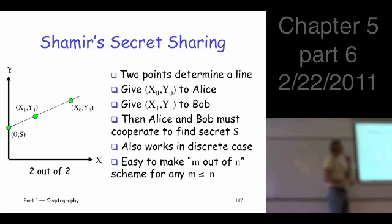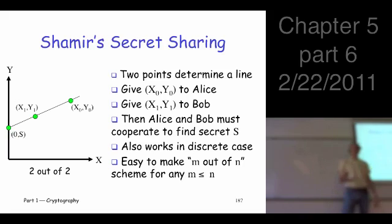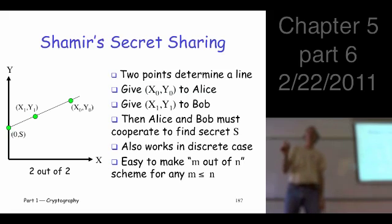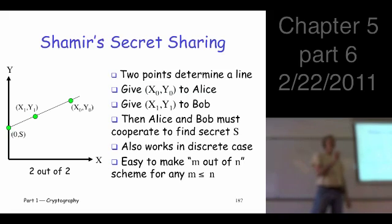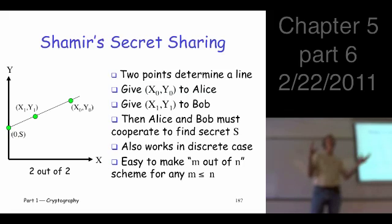So the idea is this: we want to have Alice and Bob share a secret in this sense - they share together, they can determine the secret, but individually each of them knows nothing about the secret. That's the goal here.